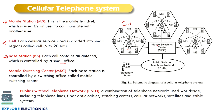The base stations handling different mobile stations are connected to a Mobile Switching Center (MSC), which is the central hub with a switching office. The MSC is then connected to the PSTN — the Public Switched Telephone Network — which is a combination of telephone networks. Similar MSCs, different switching centers, and fiber optic or wired cable connections to stationary phones can all connect to the PSTN. This is a schematic diagram of a cellular telephone system.